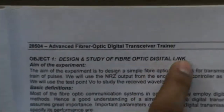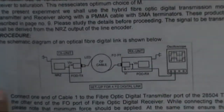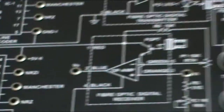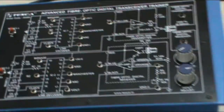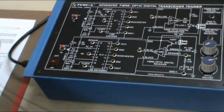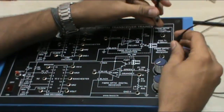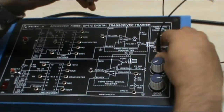Let's start with the experiments. Our first experiment objective is the design and study of a fiber optic digital link. These are the connections we have to make. First, this is our fiber optic wire cable — connect it to the TX and RX of the FOD point. Connect it gently.